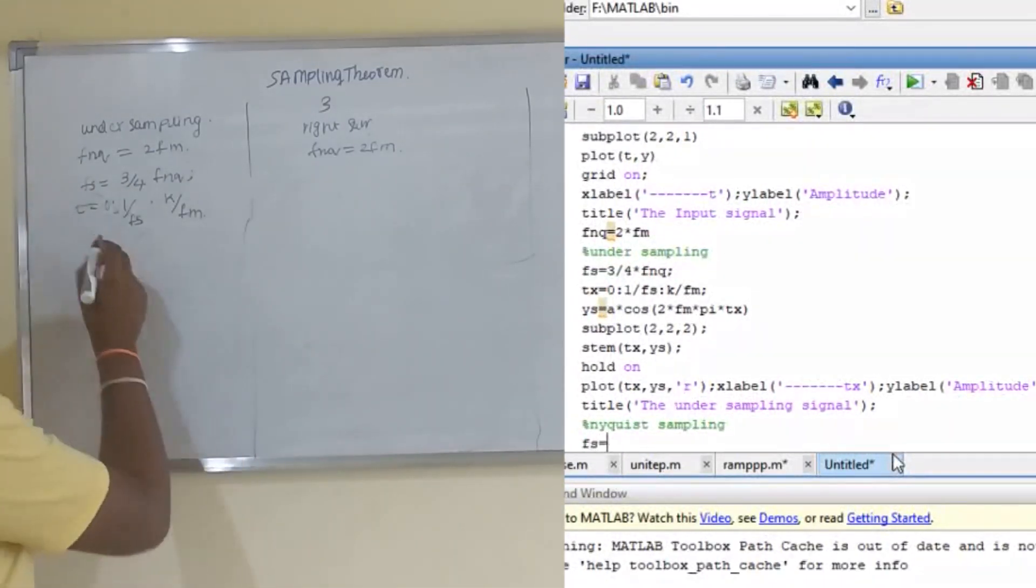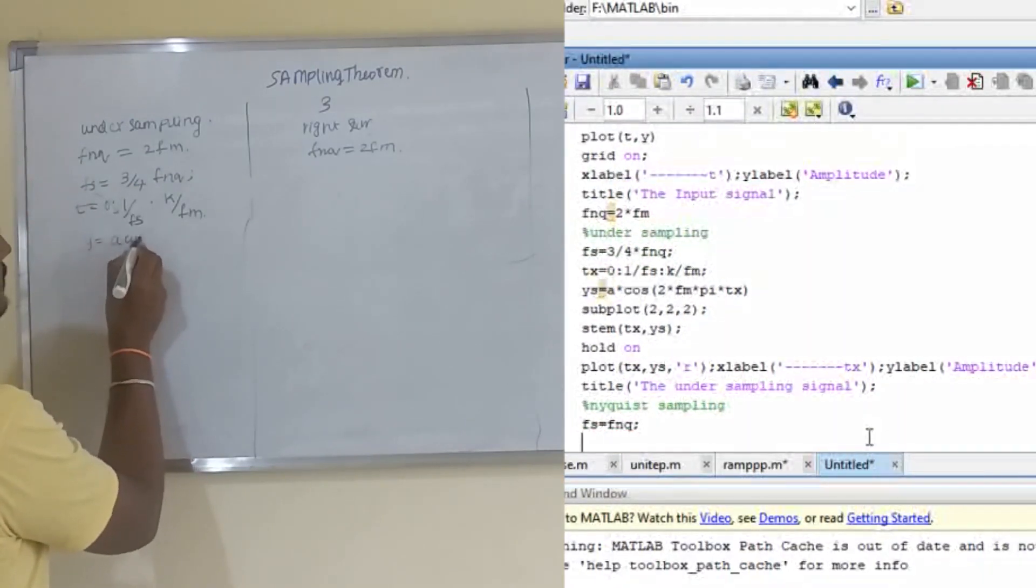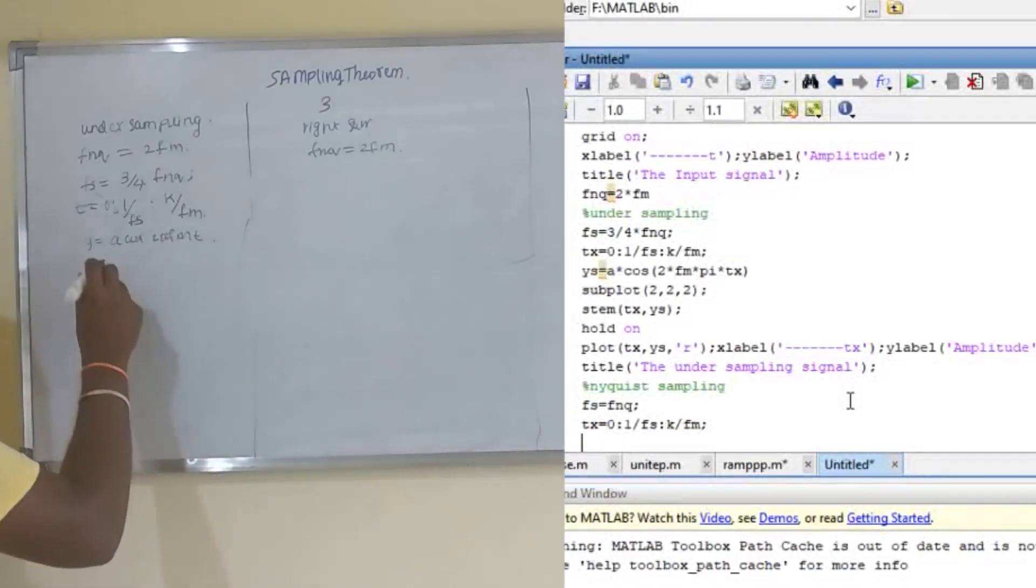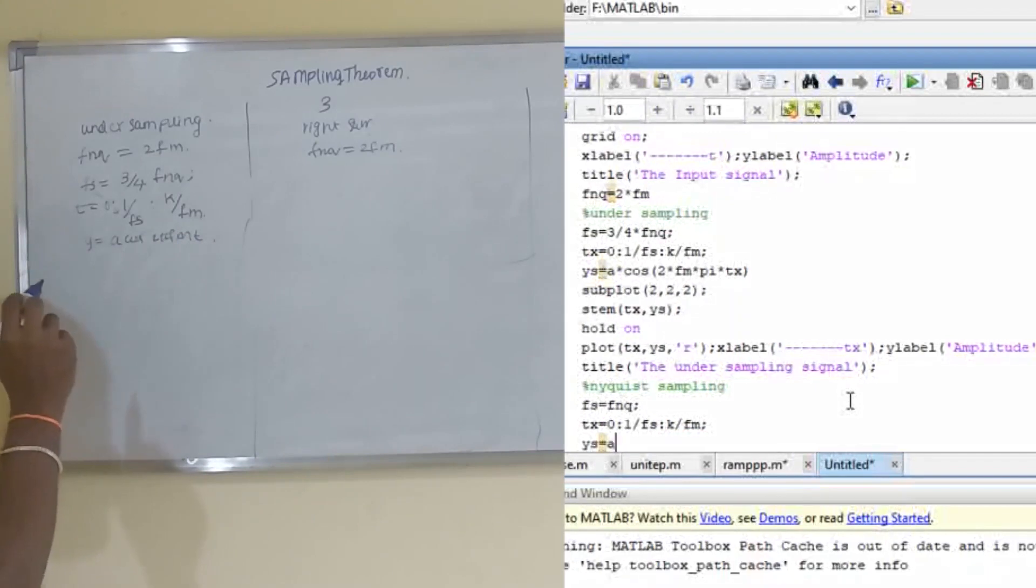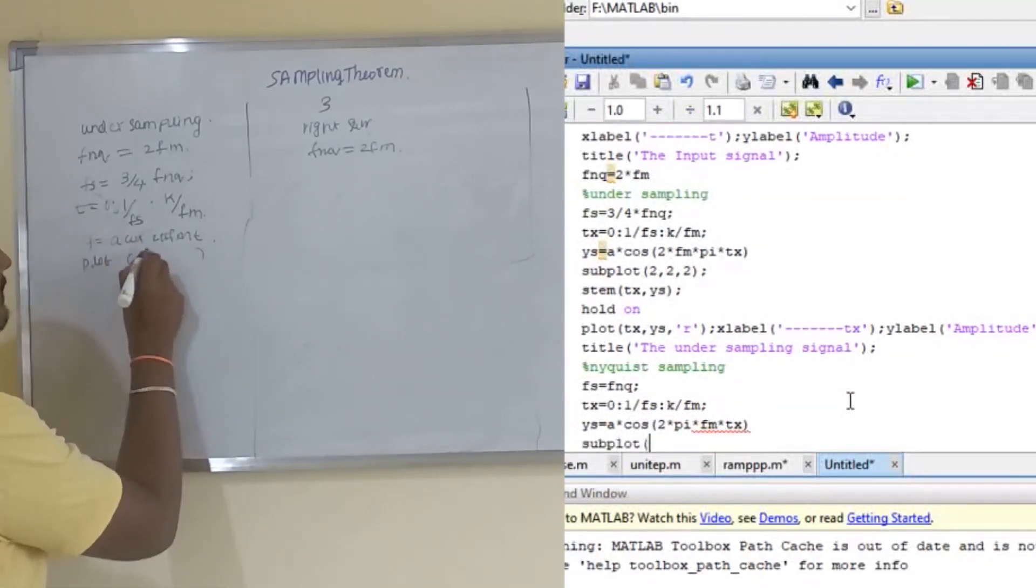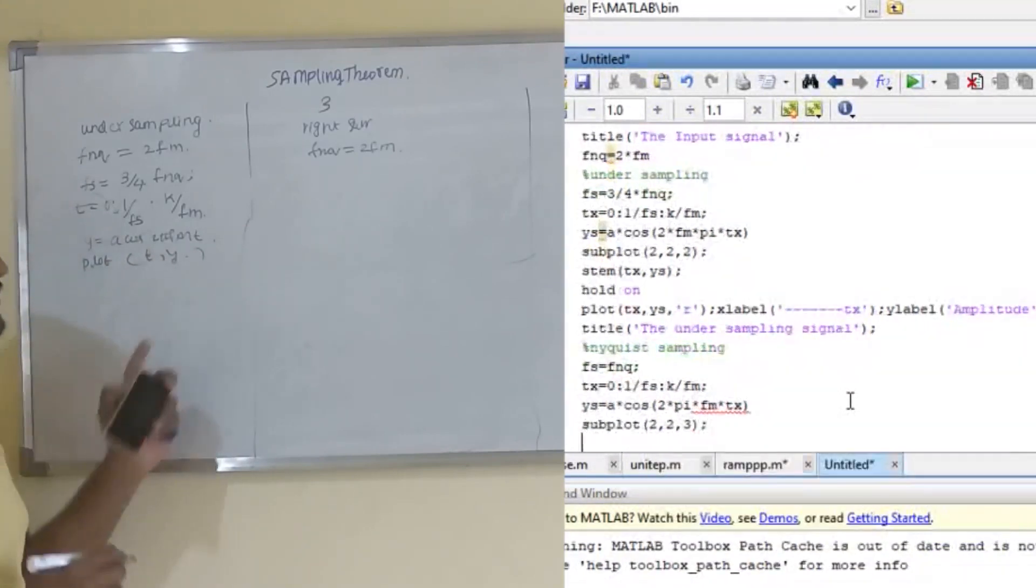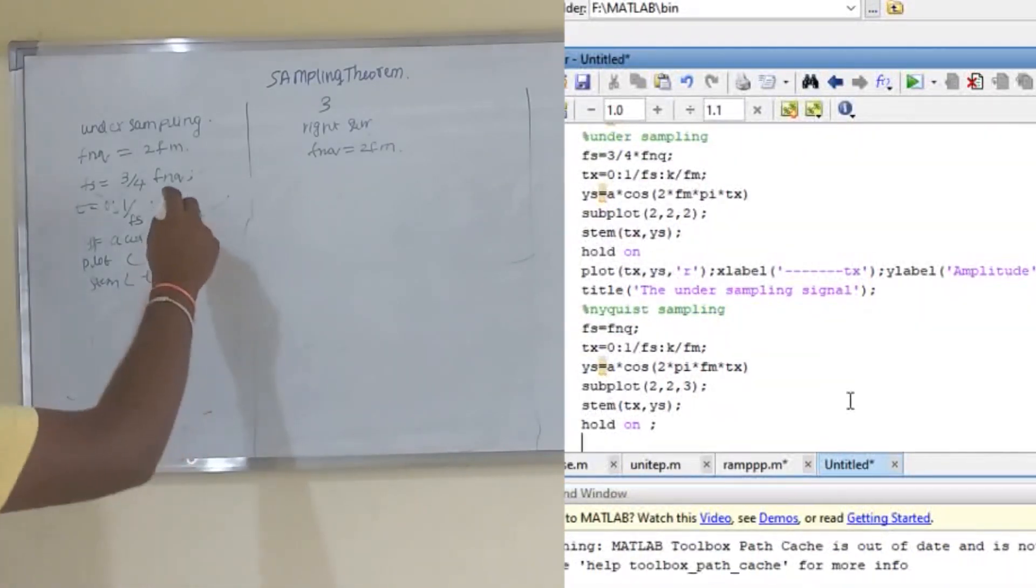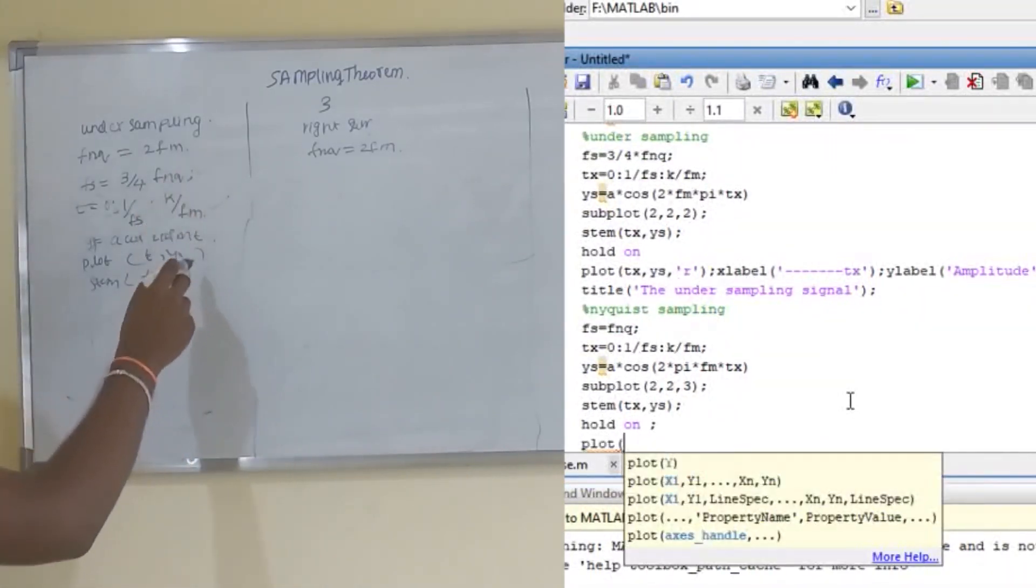You are already seeing it will be less than 2Fm if you use 3 by 4th of Fnq. After getting T, we will need to calculate Y same as A cos of 2 pi Fm T. This will be using as a formula. After doing this one, we need to again subplot. We will be plotting T, Y as you are seeing code in that final.